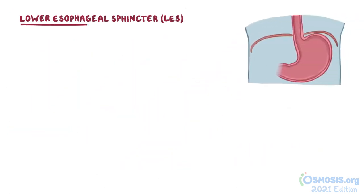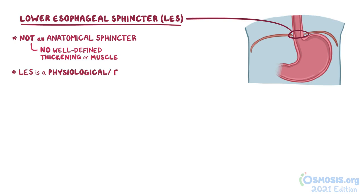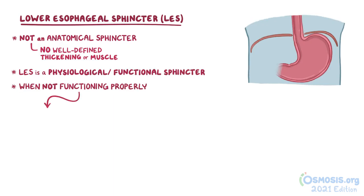The lower esophageal sphincter, or LES for short, is actually not an anatomical sphincter, which means histologically there is no well-defined thickening or muscle that controls the LES. Instead, it is considered a physiological or functional sphincter. But when the sphincter isn't functioning properly, it can lead to gastric acid reflux into the lower esophagus, which can cause heartburn.